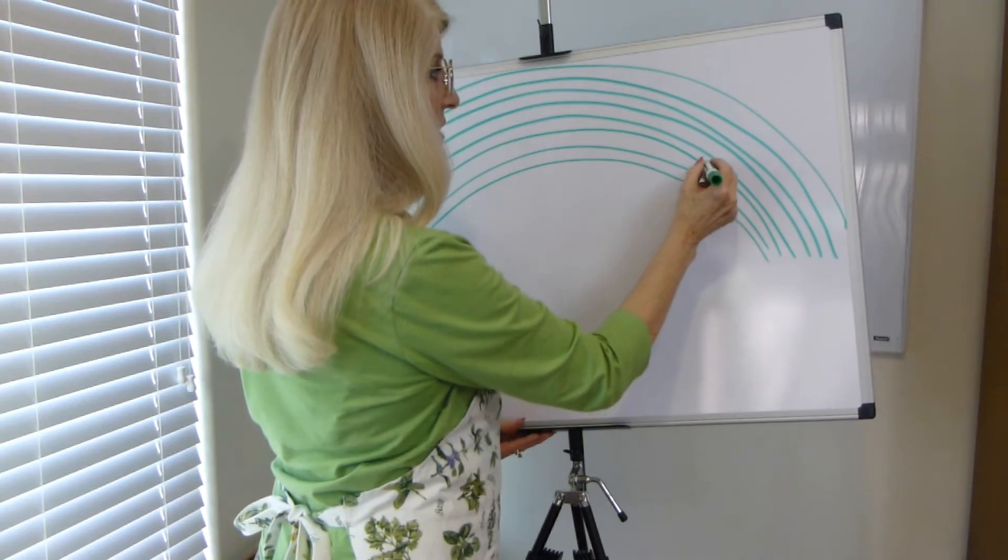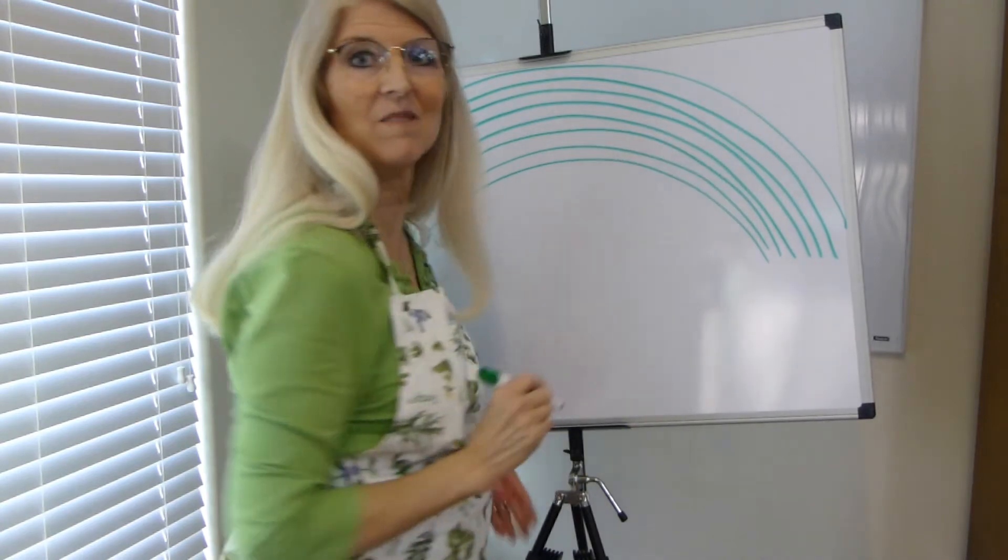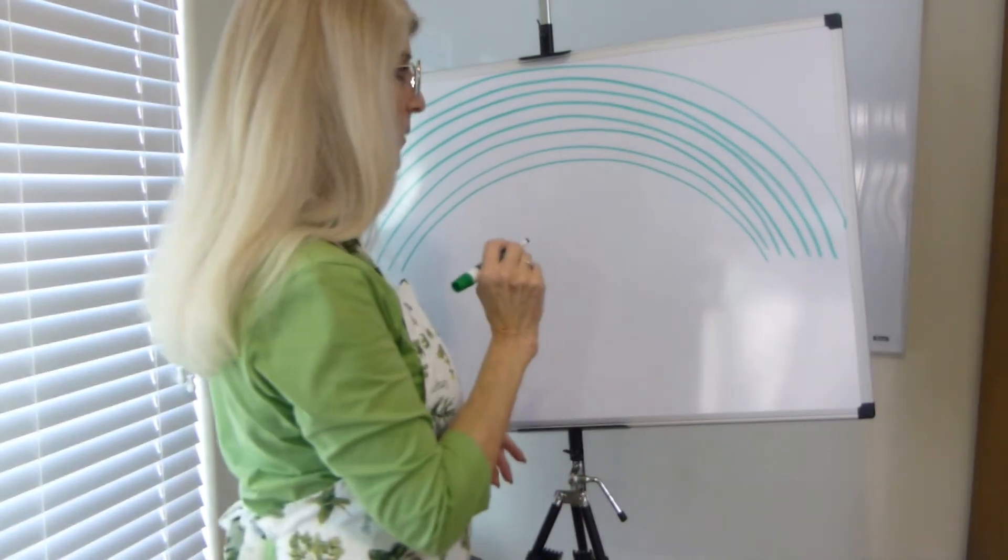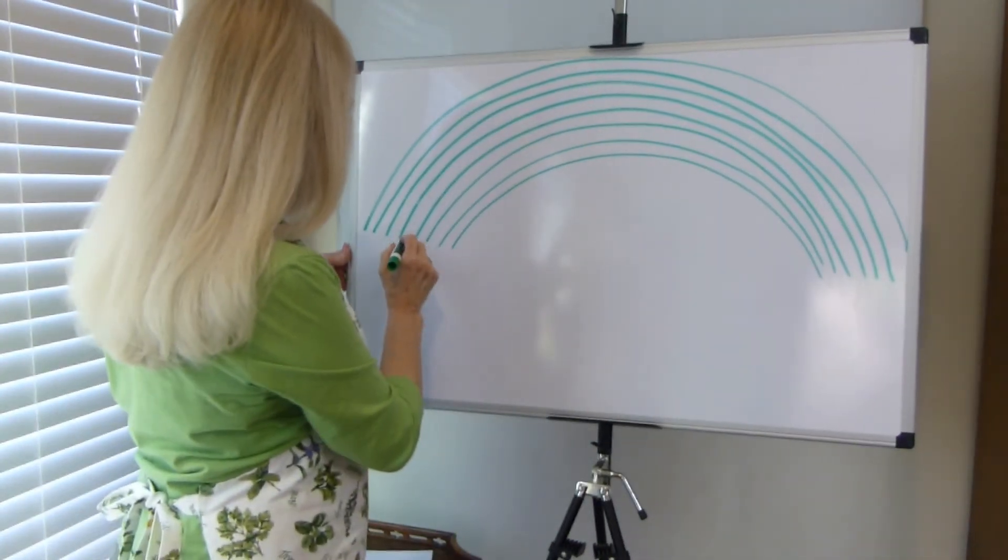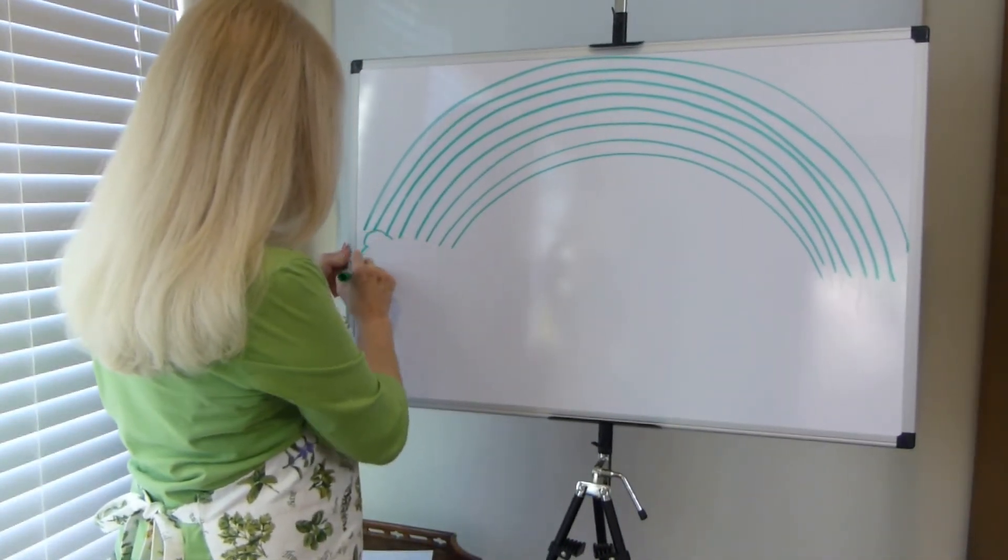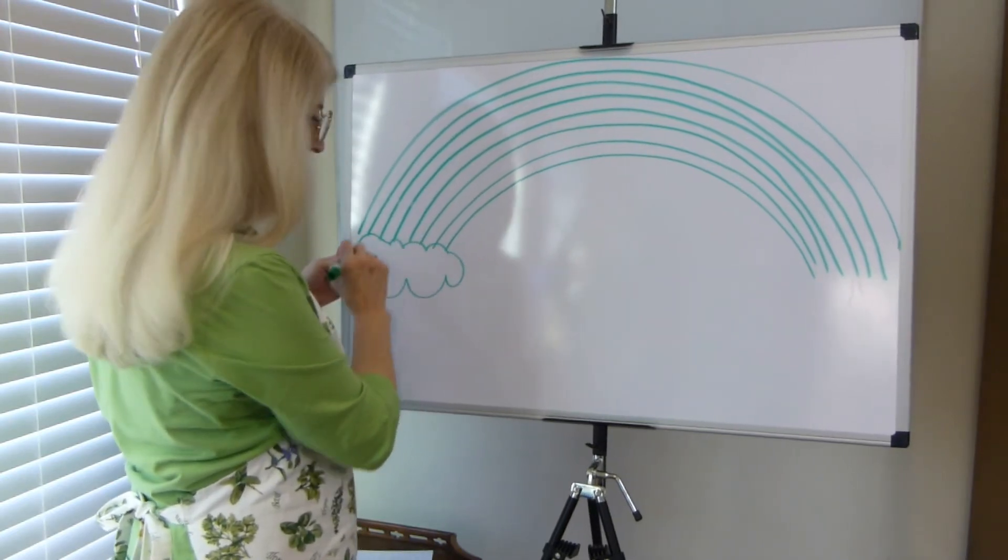Should give us seven sections. Let's double check on that. One, two, three, four, five, six, seven. Good. Now we can color them with a rainbow. So on this end of the rainbow we're going to make some puffy clouds to kind of finish it off.